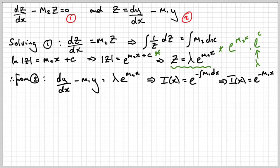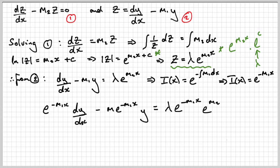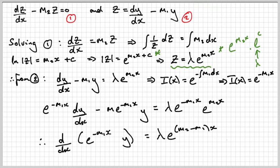Multiplying throughout by that integrating factor, the left-hand side collapses using the product rule directly, and I can write the result as the derivative of (e^(−m1x) · y) equals λe^(m2x) · e^(−m1x).